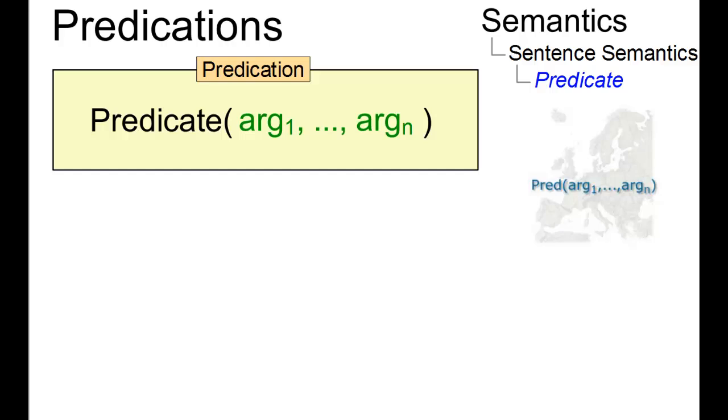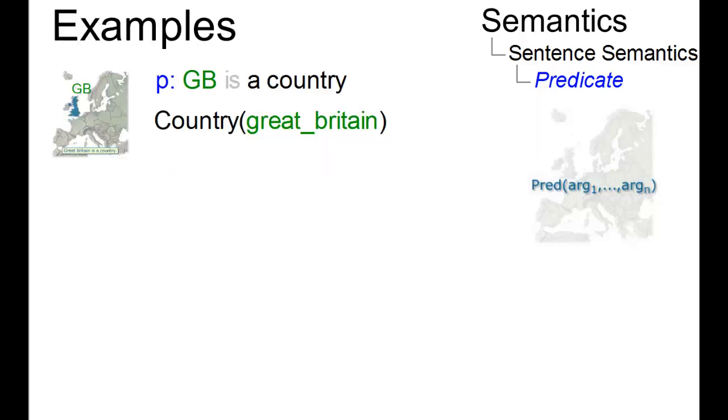Let's look at further examples. The first is a simple predication, where the one-place predicate country assigns some property to its argument. Great Britain is a country.